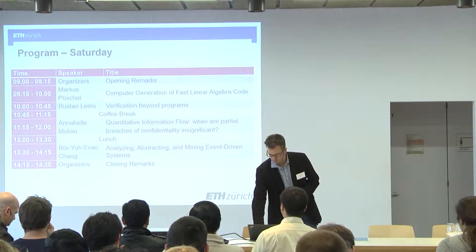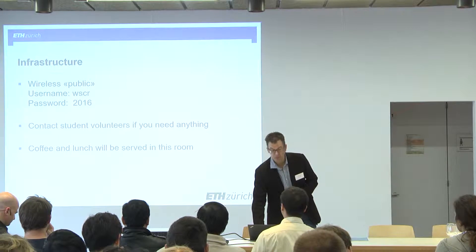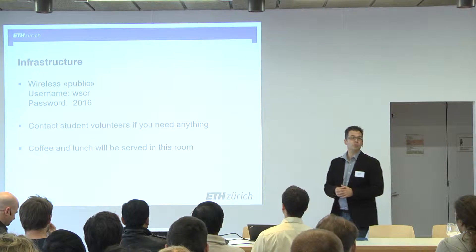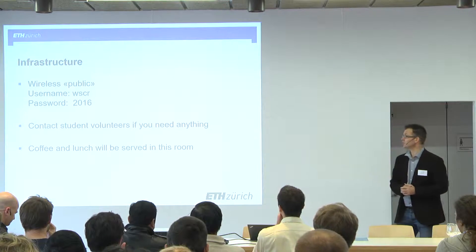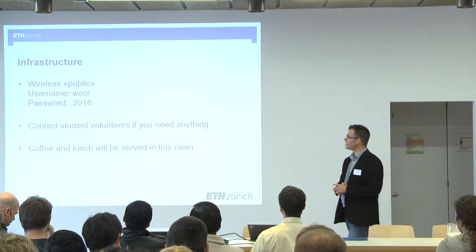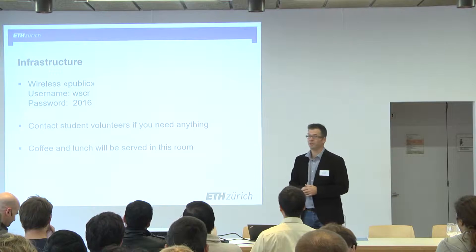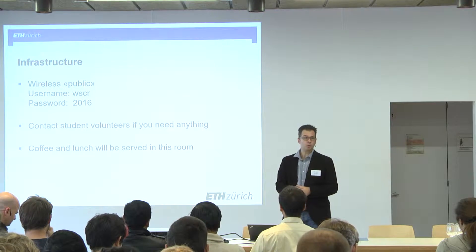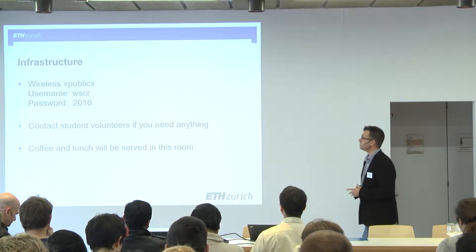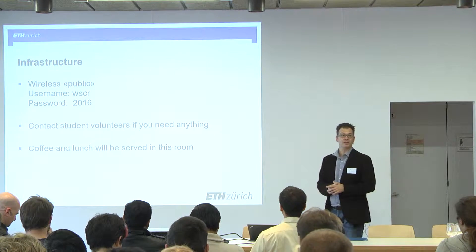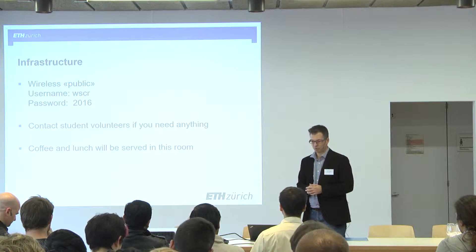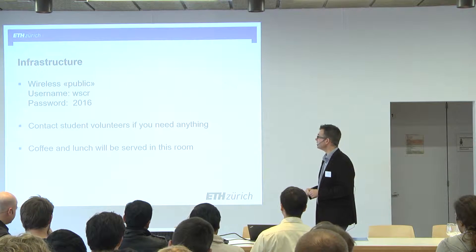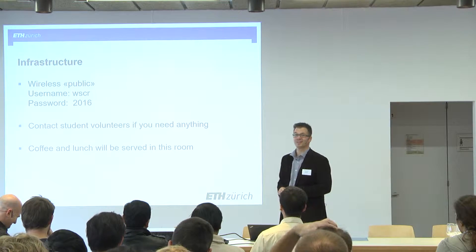The least important information is access to the wireless, because you won't need it — you will pay attention to the talks non-stop, of course. But if you really need it in the breaks, the wireless is called 'public', the username is WSCR — Workshop Software Correctness Reliability — and the password is 2016. I update one character every year on this slide; you can guess which one that is.